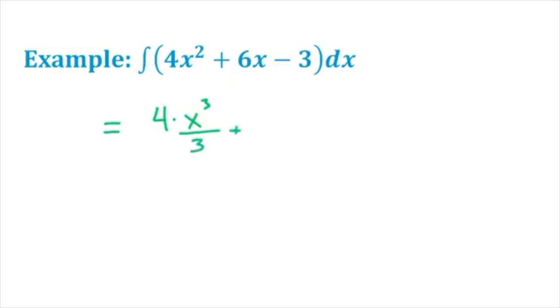Similarly for the 6x term, 6 is a constant multiple. We'll be integrating x, which has an exponent of 1, so increasing that power we get 2 and divide by that new power. When you integrate a constant, remember that a constant such as negative 3 is really negative 3x to the power of 0. We're increasing that power by 1 and dividing by the new power. We'll tag on our constant of integration since this is an indefinite integral.